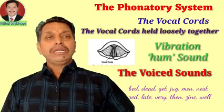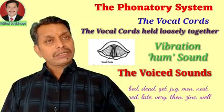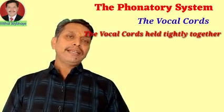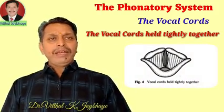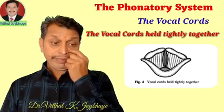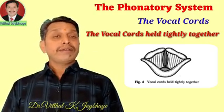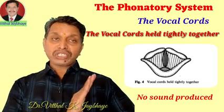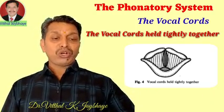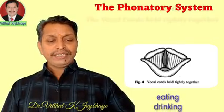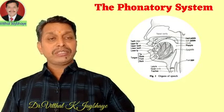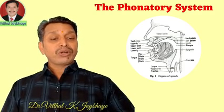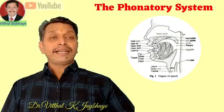The initial sounds of words like 'bed' and similar words are known as voiced sounds. The third very important situation of the vocal cords is 'vocal cords held tightly together.' When vocal cords are held tightly together, no air escapes through the trachea, meaning no sound is produced — the glottis is closed. This is the situation of the vocal cords when we eat or drink. These are the three very important positions of the vocal cords under the second very important system of organs of speech — the phonatory system.